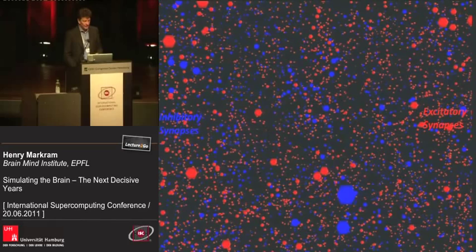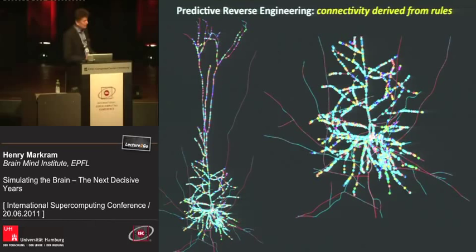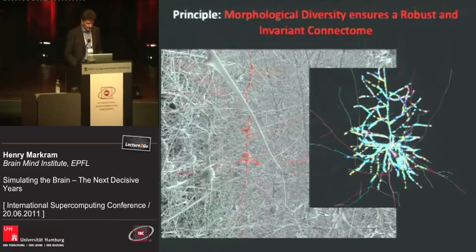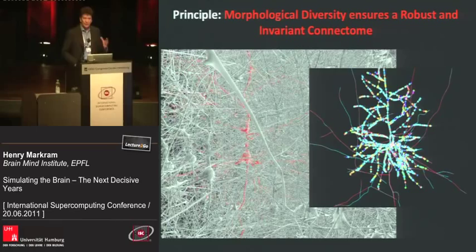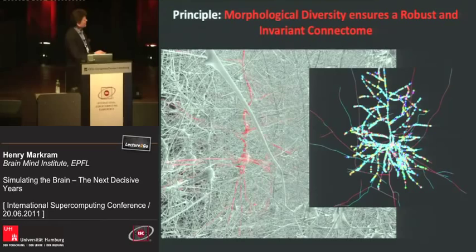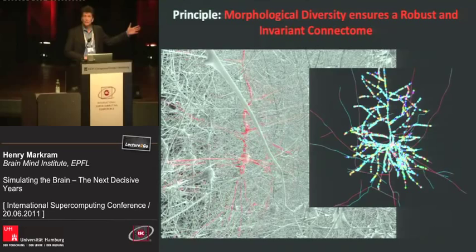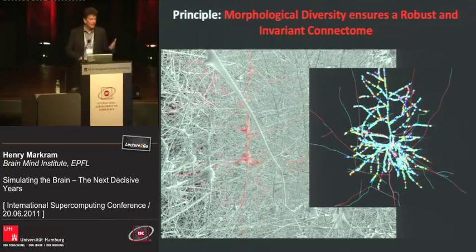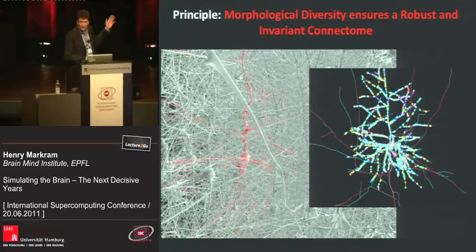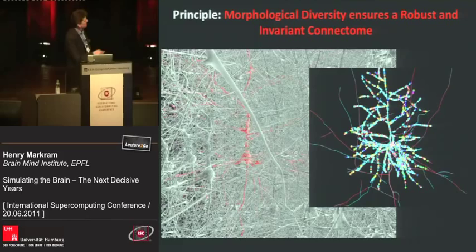For the first time we could computationally derive the positions of synapses in the brain and solve in part what we call the connectome problem. This is predictive reverse engineering — applying rules learned in biology to computationally map out where all the synapses are. We also discovered something amazing: you can take these neurons and spin them, rotate them, put them in almost any position, and the map of where the synapses are doesn't change — it stays invariant.